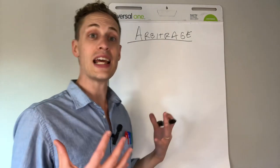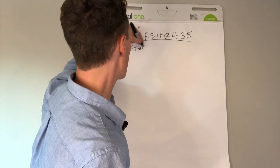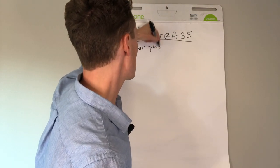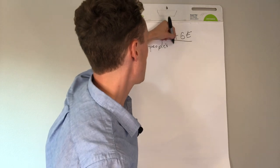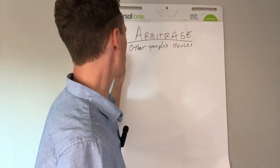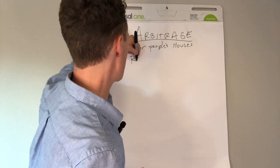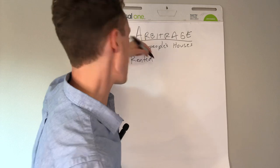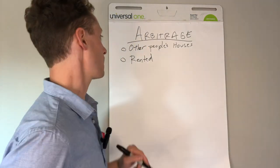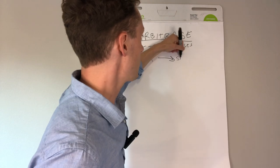But what it is, is I used other people's houses. So I used other people's houses. In other words, I just rented. And then as a renter, I sublet. It was all above board. There's nothing sketchy.